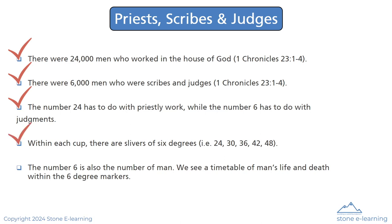Within each cup there are slivers of 6 degrees — for example: 24, 30, 36, 42, 48. The number 6 is also the number of man. We see a timetable of man's life and death within the 6-degree markers.